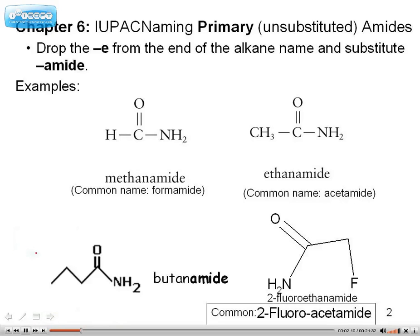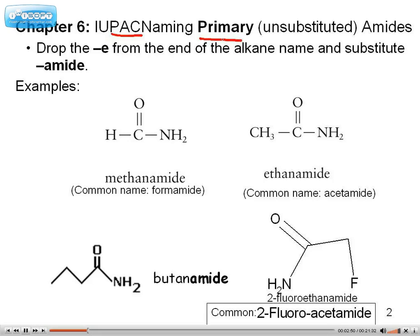As far as naming using the IUPAC method, we're going to focus on primary amides. We know it's a primary amide because the amine is only connected to one other carbon. For a secondary amide, it's connected to two carbons, and so forth. For IUPAC naming of primary amides — also known as unsubstituted amides — all you have to do is drop the 'e' and replace it with 'amide.'